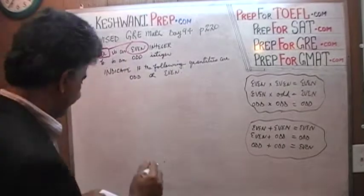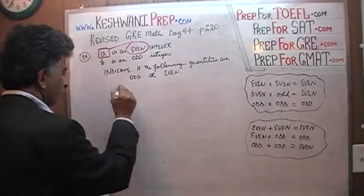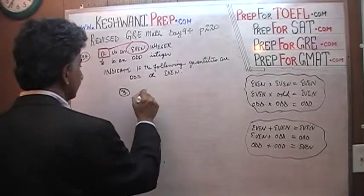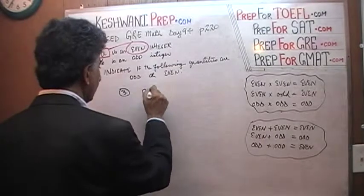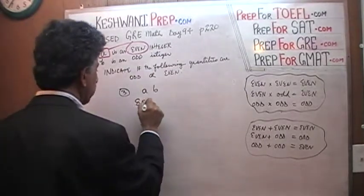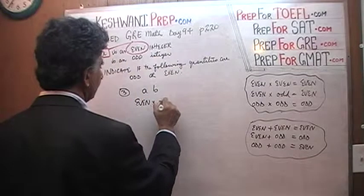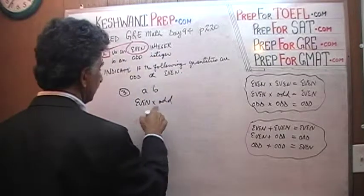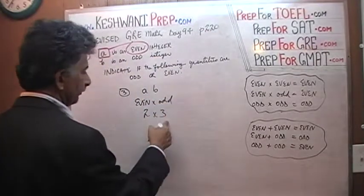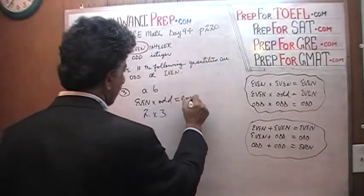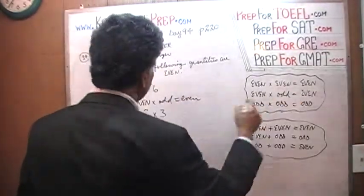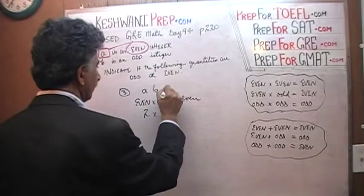Number three simply says a times b. This is straightforward: a is even, times b which is odd — even times odd. For example, 2 times 3 is 6, which is even. Even times odd is even, so this quantity is even.